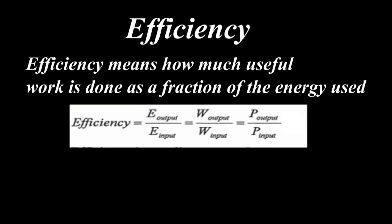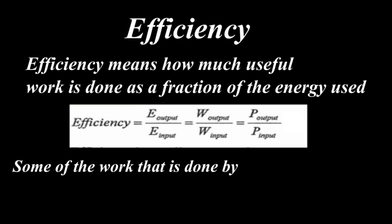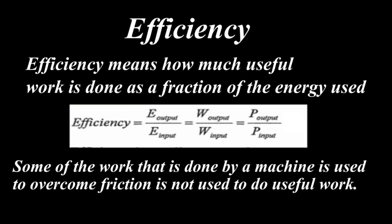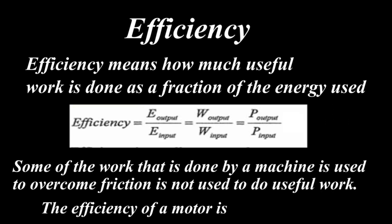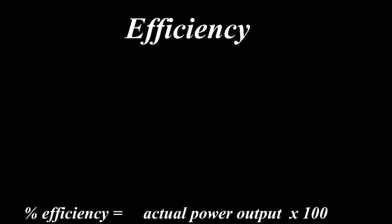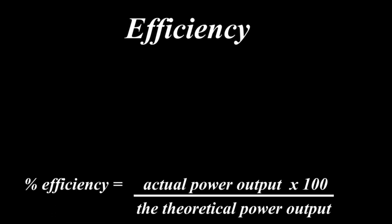Some of the work done by a machine is used to overcome friction, and that is the reason why we are not getting 100% of the work done. The efficiency of a motor is always measured as a percentage.